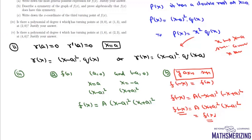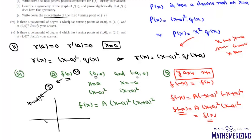Since f(x) is a polynomial of degree 4, its derivative is degree 3, allowing three turning points. We already have two at (a, 0) and (-a, 0). Since f(x) is symmetric about the y-axis, if the third turning point were anywhere other than x = 0, it would require a reflection, giving four turning points — impossible for a degree-3 derivative. Therefore the third turning point must be at x = 0.